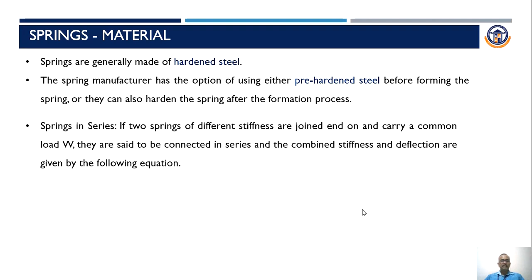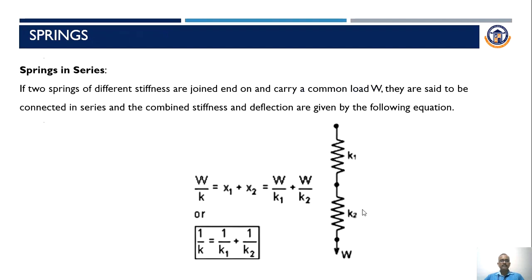Springs in series: if two springs of different stiffness are joined end-on carrying a common load W, they are said to be connected in series. The combined stiffness is given by: W/K = X1 + X2, where X1 = W/K1 and X2 = W/K2. This can be rewritten as 1/K = 1/K1 + 1/K2. This is the equation used to find the equivalent stiffness for springs in series.